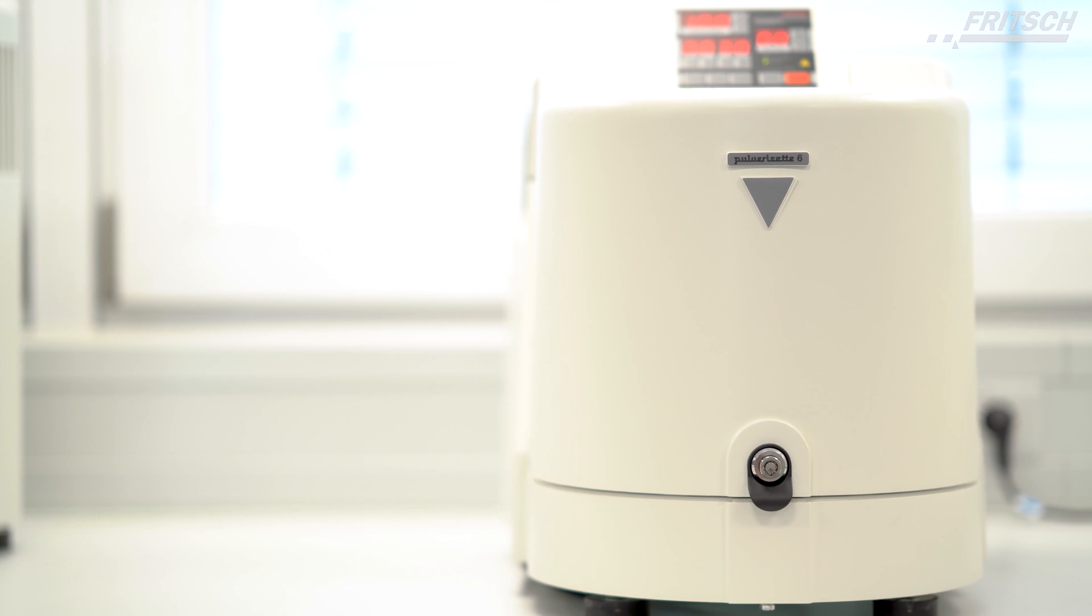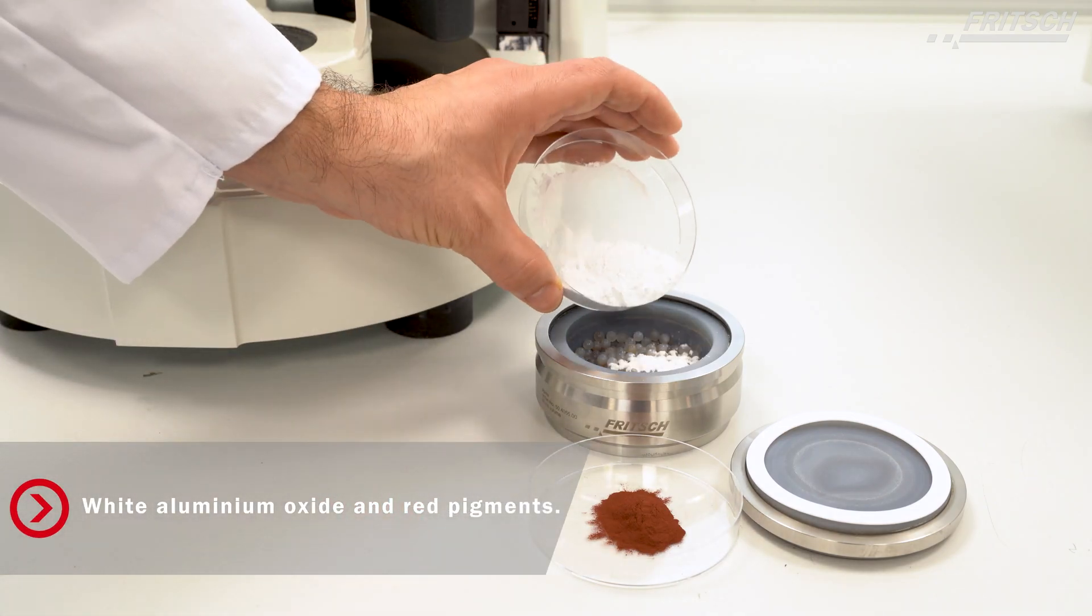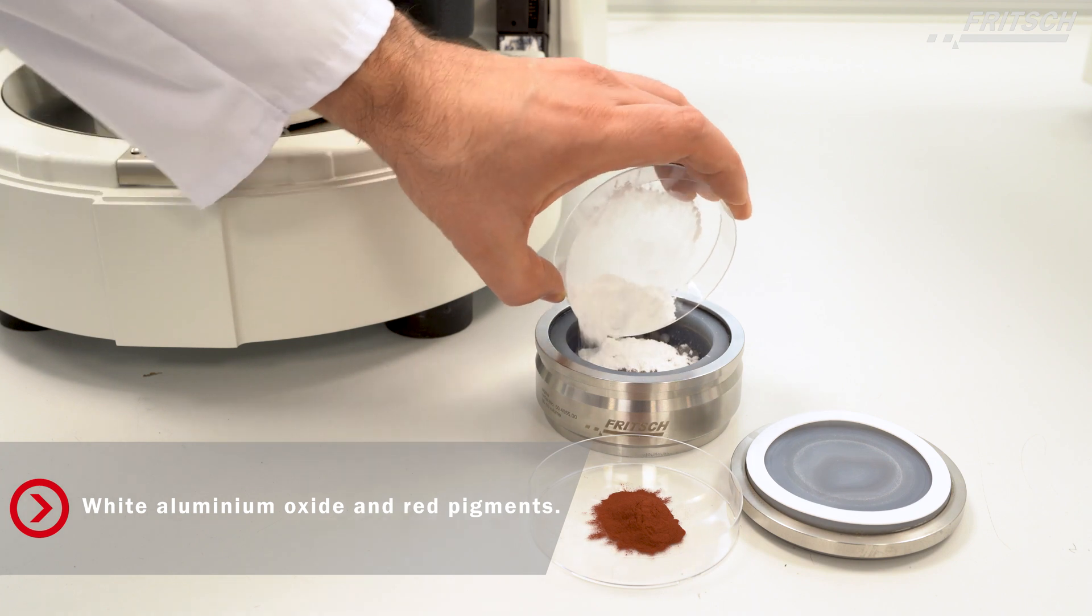We will mix two samples in this application using the Pulverisette 6 classic line. In this case, we will mix aluminum oxide and some pigments.